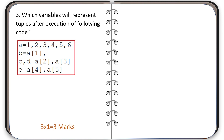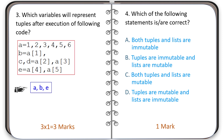Question number three: see the given code and identify which variables will represent tuples after execution. The correct answer is variables A, B, and E. Variable A will represent a tuple, B will represent a tuple, and E will also represent a tuple. C and D will not be tuples. Question number four: which of the following statements are correct?